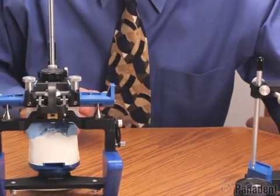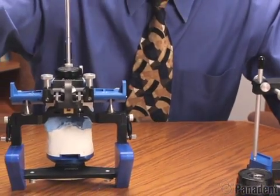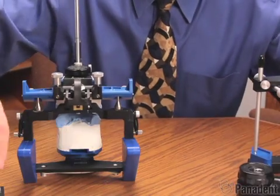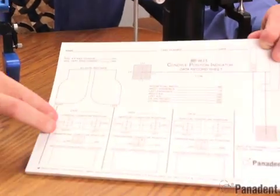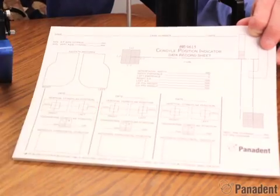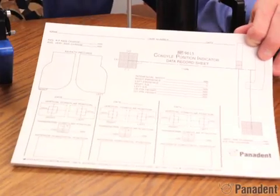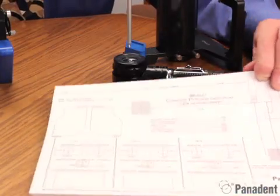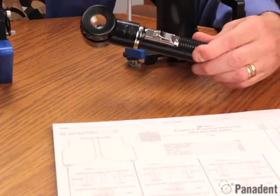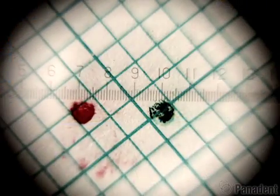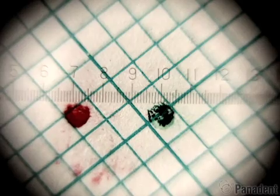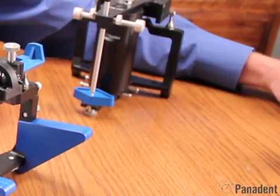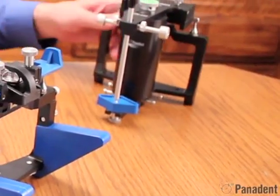With the CPI system, you do get the graph papers included, but you also get a set of data record sheets where you can add different CPI readings or axi-path recordings to the data record sheet. We do have the optional optical resolver, which has a tenth of a millimeter scale built into it so you can read the deviations from CO to CR down to a tenth of a millimeter. Otherwise, the systems are basically the same.